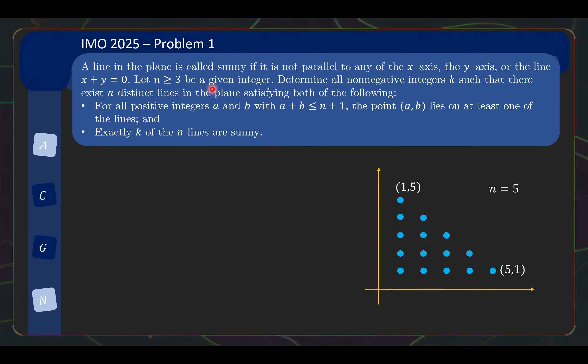Okay, so n greater than or equal to 3 is a given integer. Let's say n equals 5 over here for my illustration. Firstly, let's look at all the points a, b with a plus b less than or equal to n plus 1. And a, b here are positive integers. What are all these points?